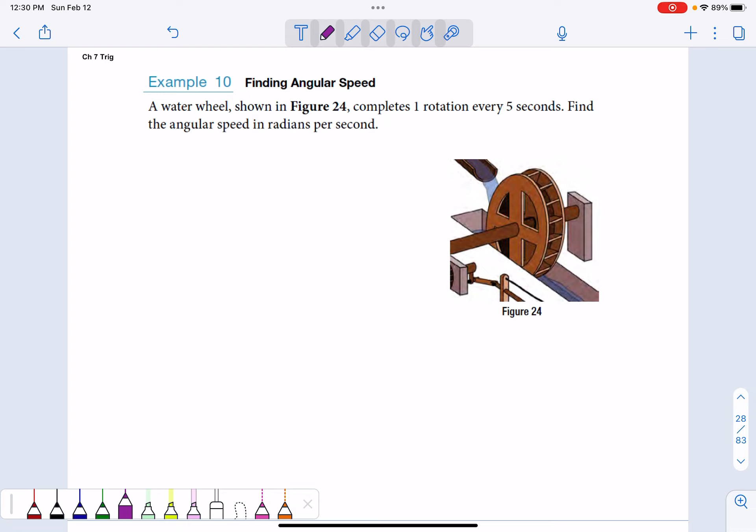Let's look at this next example. It says a water wheel is shown, completes one rotation every five seconds, find the angular speed in radians per second. Well, angular speed is omega, the radians per unit of time. One rotation is 360 degrees, which is two pi radians. We learned that in the first video. One rotation every five seconds would be two pi every five seconds, so two pi over five radians per second. It's as easy as that when they give us that much information.